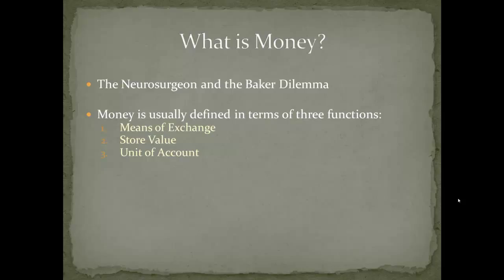A unit of account is very convenient. If you go into a supermarket you see a loaf of bread is a dollar, or donuts are two dollars and fifty cents. You understand what money means within your local economy and can get an idea of what's expensive and what's cheap — for example, how to price a Lamborghini versus a Ford Fusion.